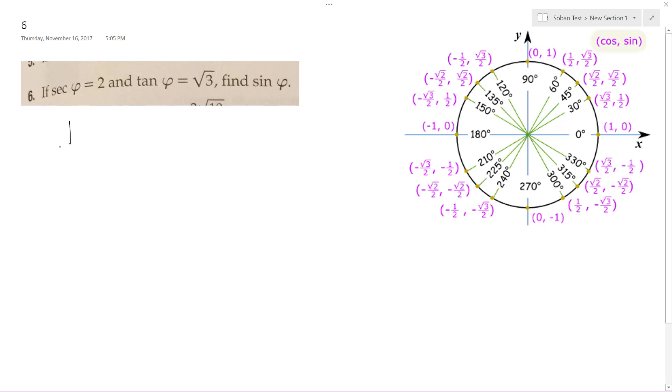So secant is one over cosine, so if this is positive and tangent's positive, that means this is going to take place in quadrant one, because that's the only quadrant where both of these are positive.